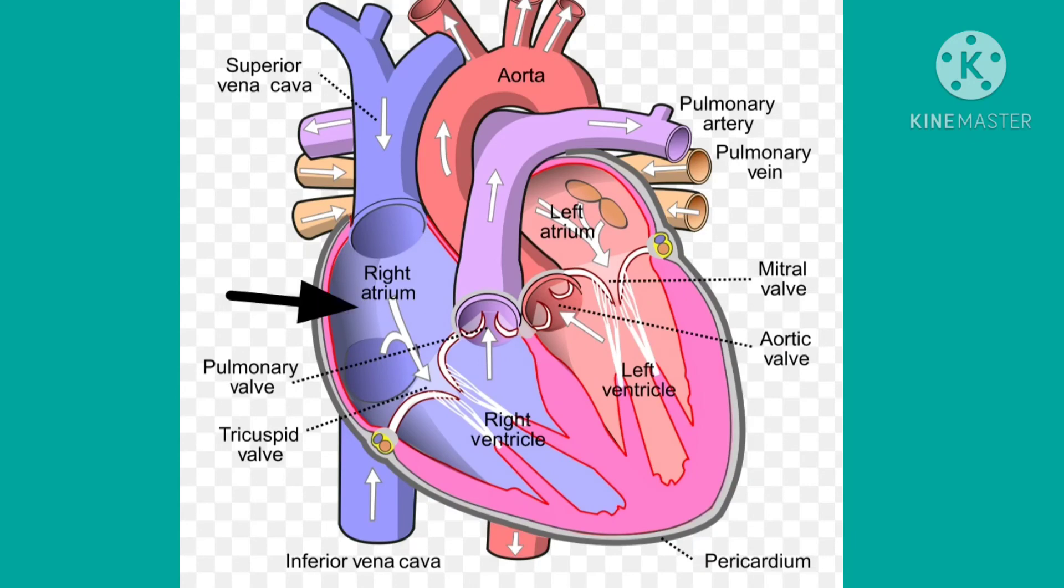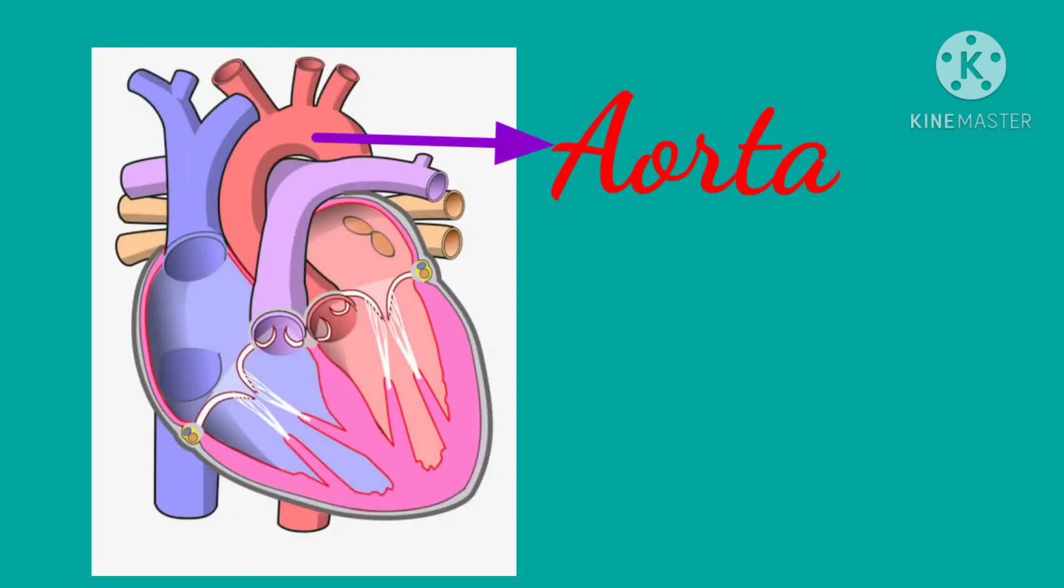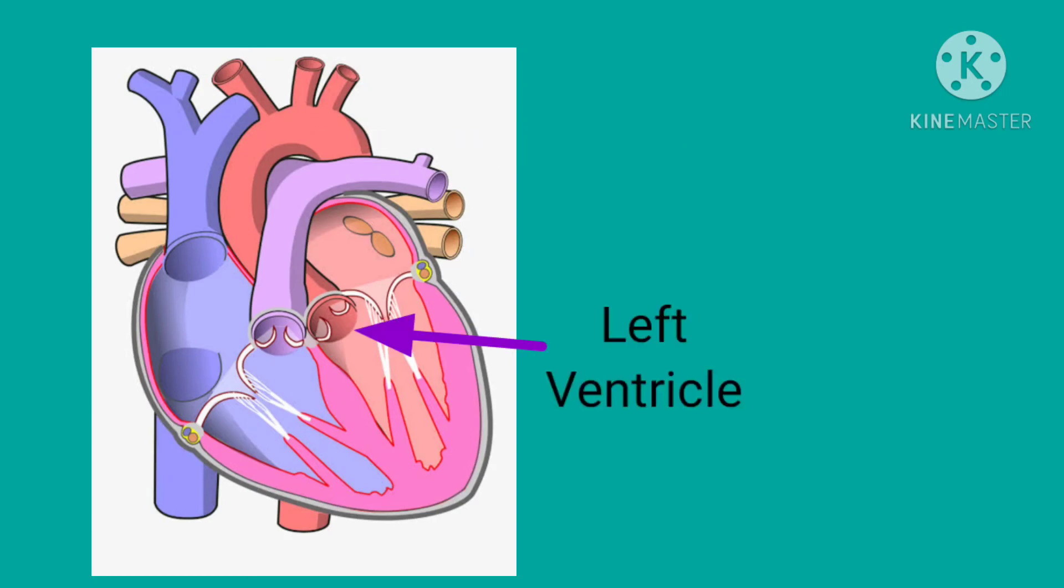Second, the aorta. It is the largest artery, which receives blood rich in oxygen from the left ventricle. The oxygenated blood is then circulated to different parts of the body.